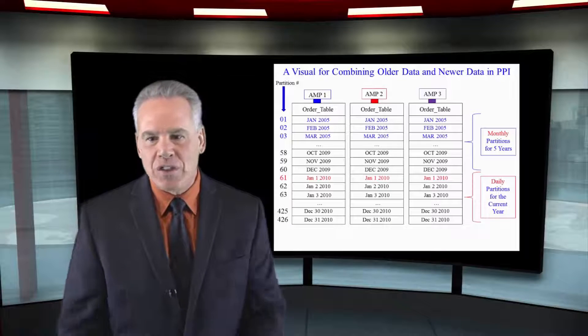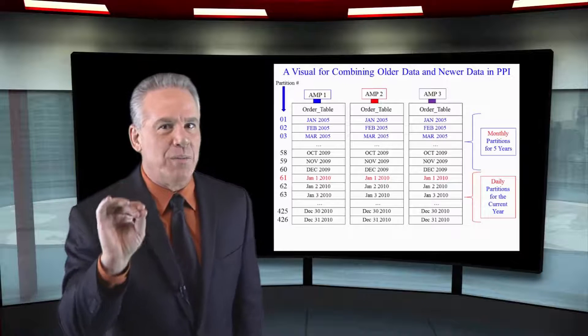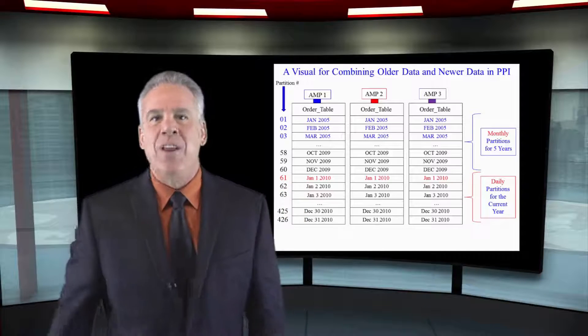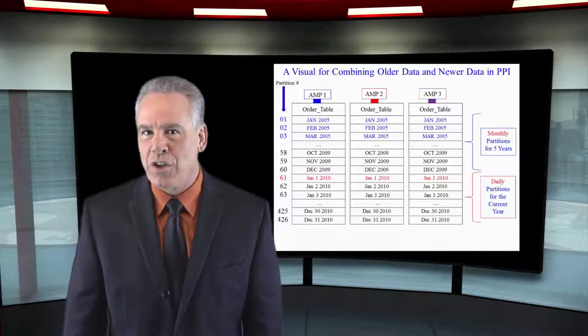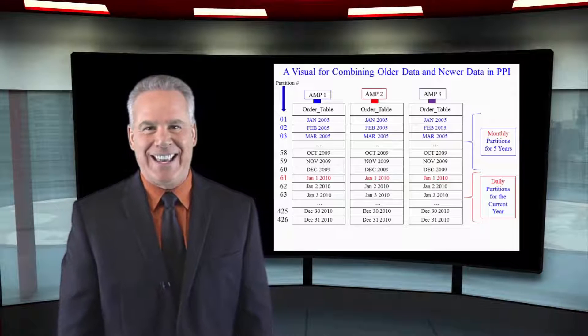The parsing engine knows this, so if you're querying older data, it knows that that's partitioned by month. Anything queried in 2010, the parsing engine knows those are partitions per day, and it's going to guide the amps on exactly what to get.